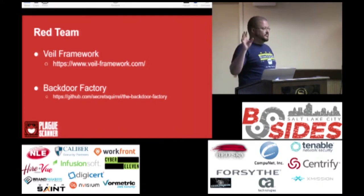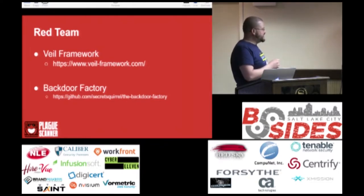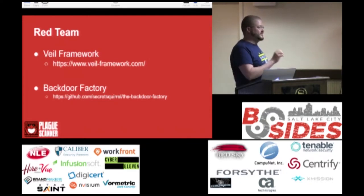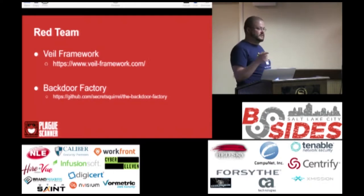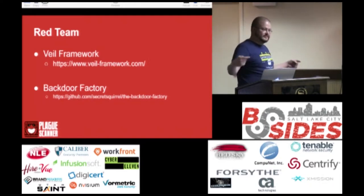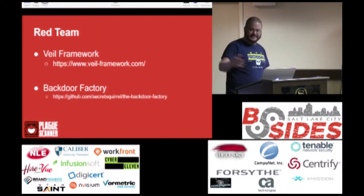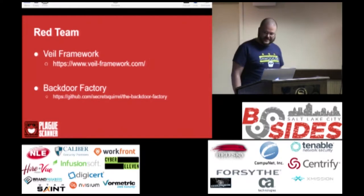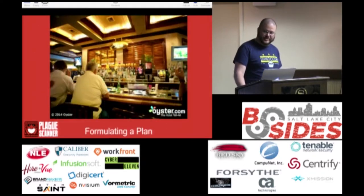Backdoor Factory has been in the news, though maybe not directly. Has anyone heard of Onion Duke? It's a piece of malware. About six months ago there was a Tor exit node discovered that was backdooring all of the binaries going through it. That was someone in Russia who had downloaded a copy of Backdoor Factory, installed it, combined it with a Tor exit node, and created a malware transmission system. That's one use case of that.